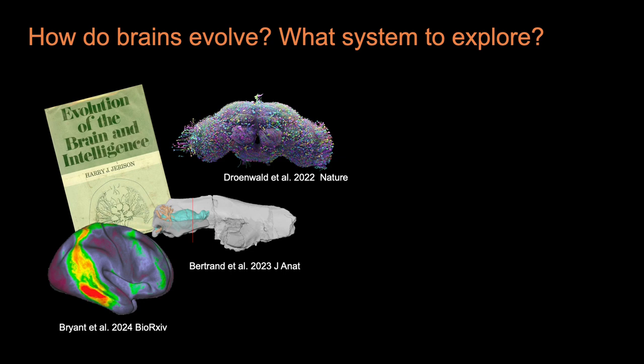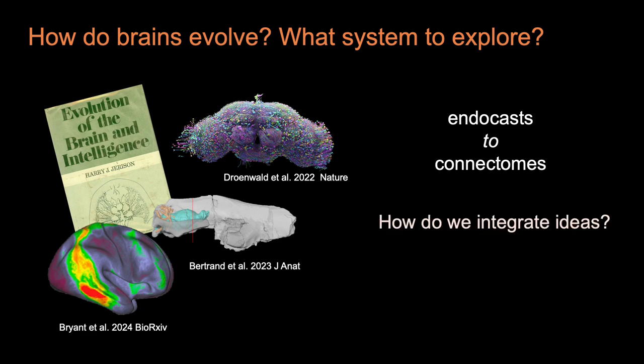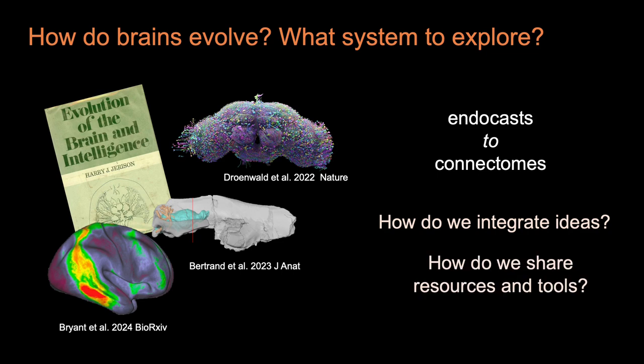As a field, the study of brain evolution spans endocasts to connectomes, and the study of brains with billions of neurons to those with only a few hundred. So how do we integrate ideas across such a large research space to help identify general principles, and what can we do to support efforts to share concepts, resources, and tools? These are some of the questions that we hope to explore in our network.